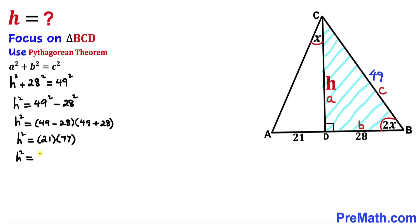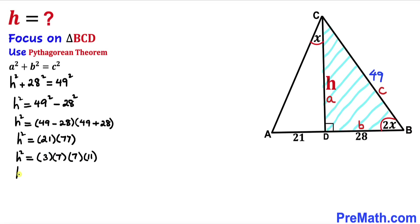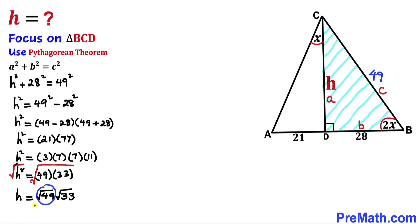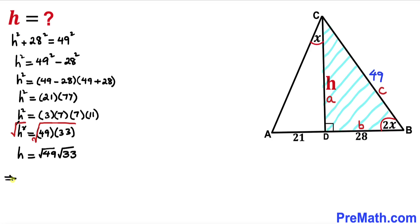H squared equals 21 times 77. We can write 21 as 3 times 7, and 77 as 7 times 11. So we have 3 times 7 times 7 times 11, which gives us 49 times 33. Taking the square root of both sides, H equals the square root of 49 times the square root of 33. Since the square root of 49 is 7, our height H equals 7 times the square root of 33.